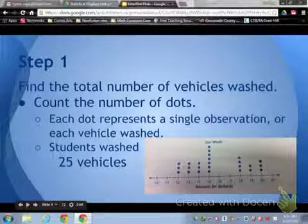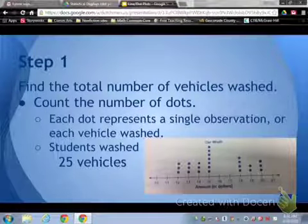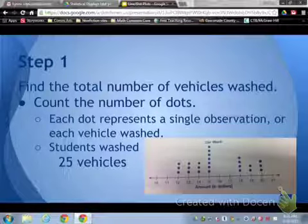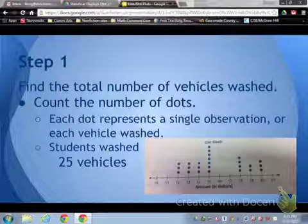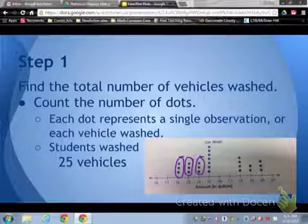Step one, we find the total number of vehicles washed. You just count the number of dots or X's. Each dot represents one observation, or in this case, one vehicle. So if we count them up, we can see that we have three in the first column here, three here, and three here, so that's nine.